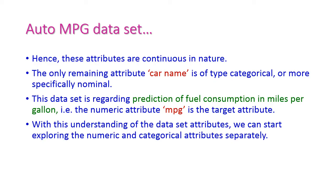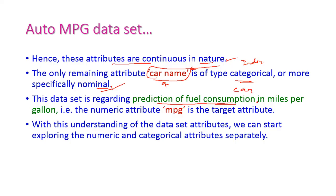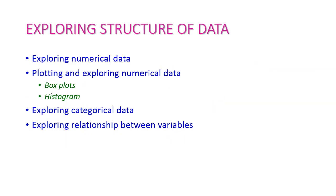From the dataset we can understand that most attributes are continuous in nature. The car name is used as an index, meaning only one car name per record — it is a type of categorical, possibly nominal. This auto MPG dataset is used for prediction of fuel consumption of a car in miles per gallon, so MPG is our target attribute. With this understanding, we start exploring the numerical and categorical data separately.